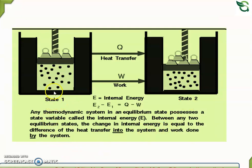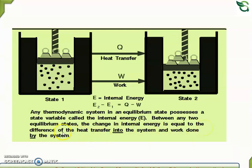A thermodynamic system in an equilibrium state possesses a state variable called internal energy, that is E. Between any two equilibrium states, the change in internal energy is equal to the difference of heat transfer into the system and work done by the system.